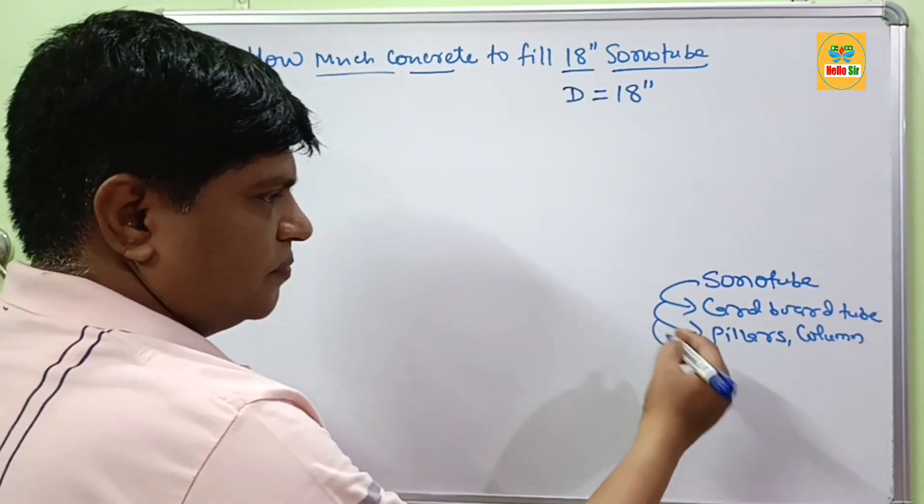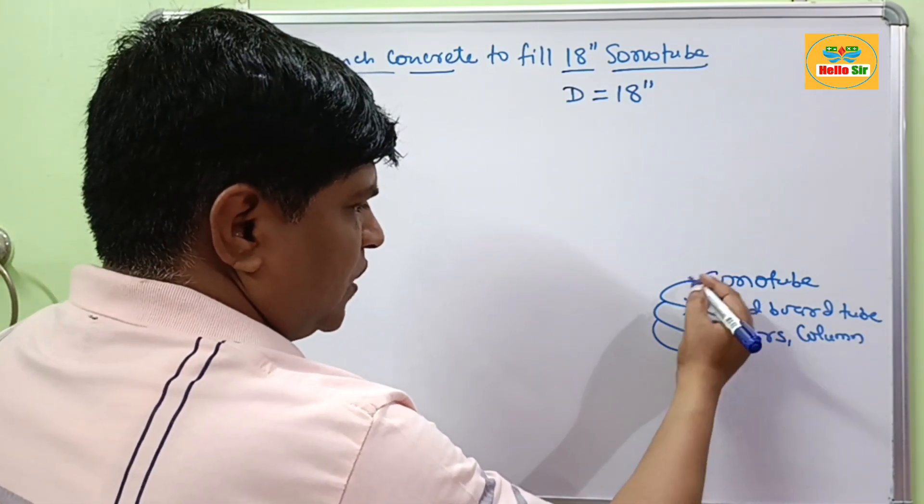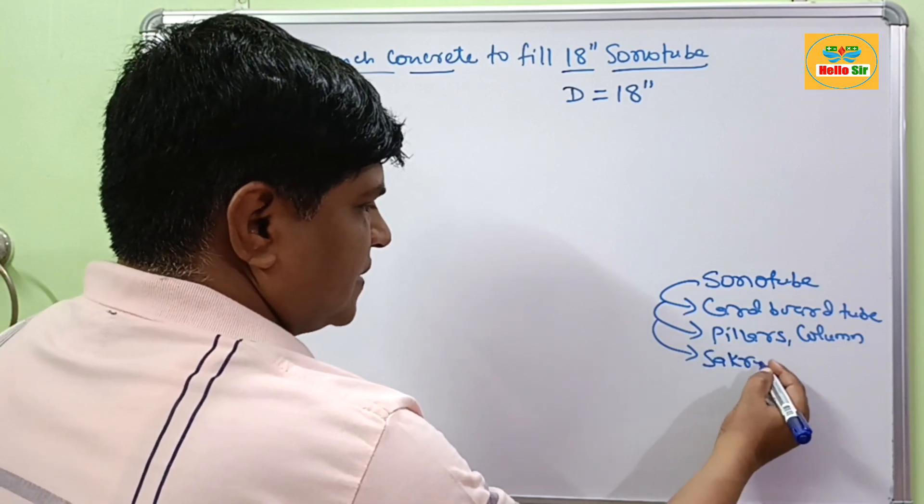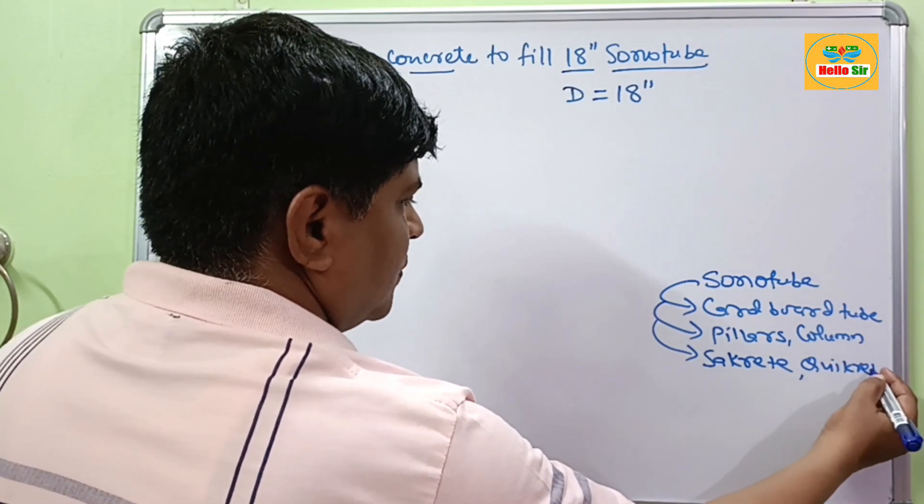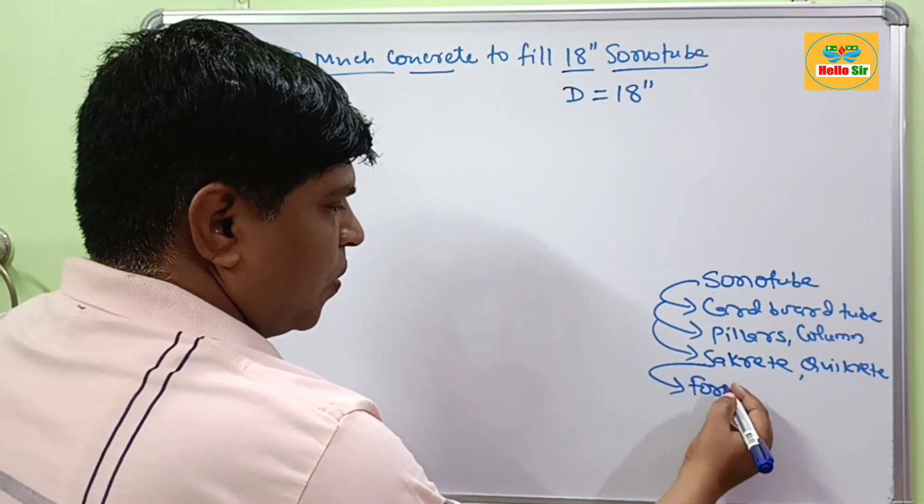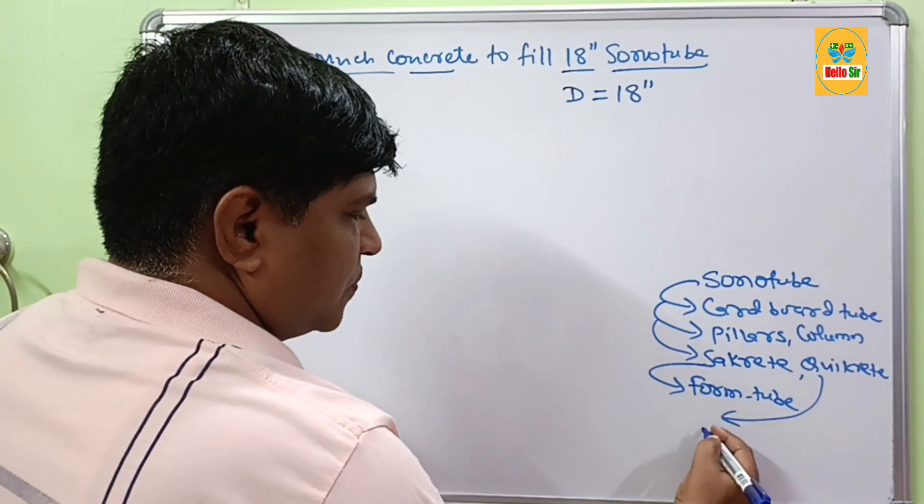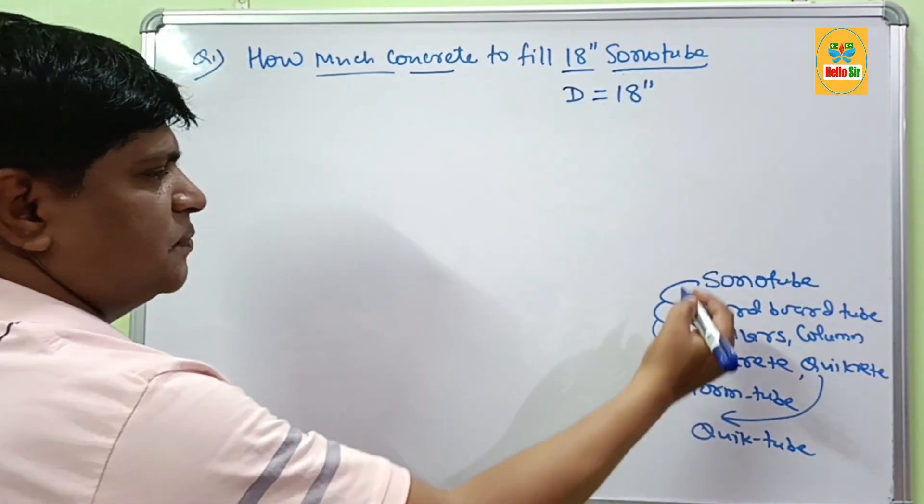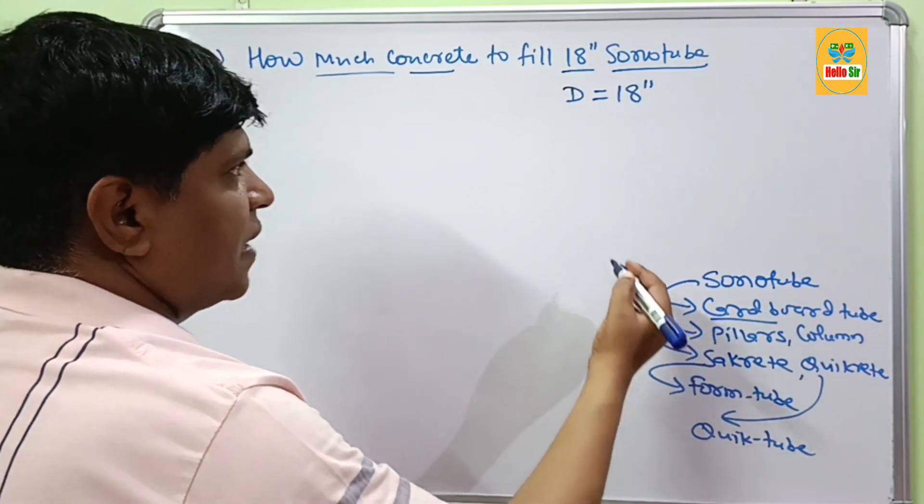And it can be used below the ground and above the ground. Sonotubes is a trademark company brand name and other companies like Sakrete and Quikrete also make their own sonotubes. Sonotubes name is Formtube and Quikrete is called Quiktube. And sonotube is made of biodegradable material called cardboard.